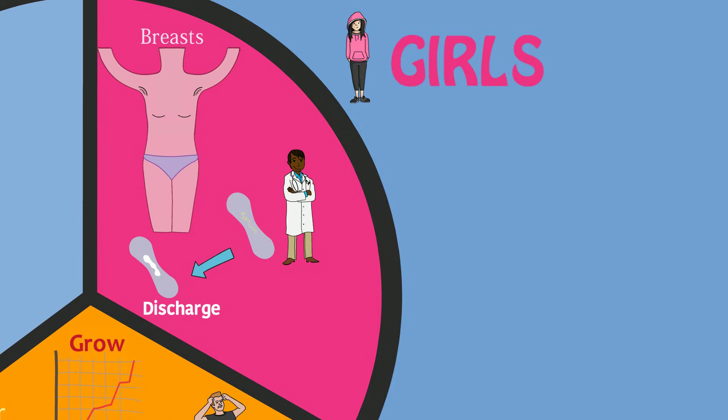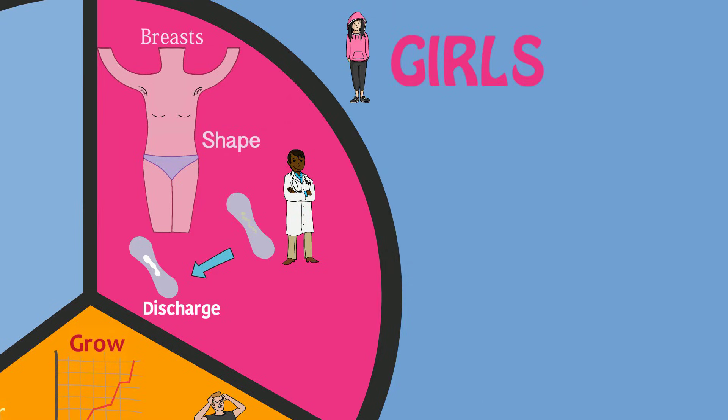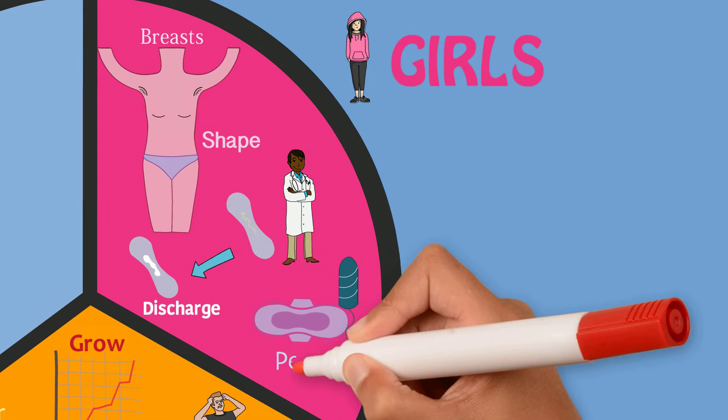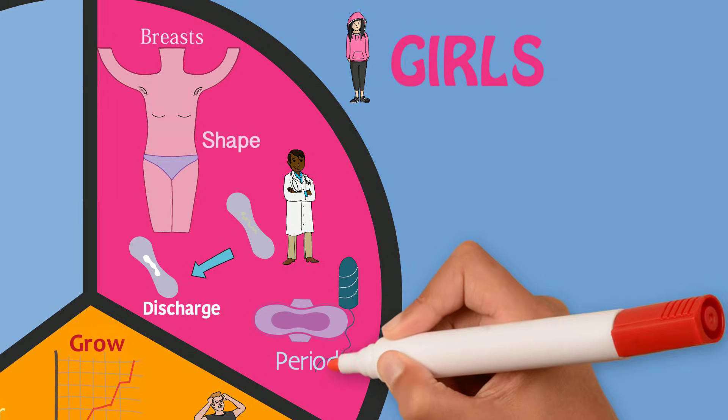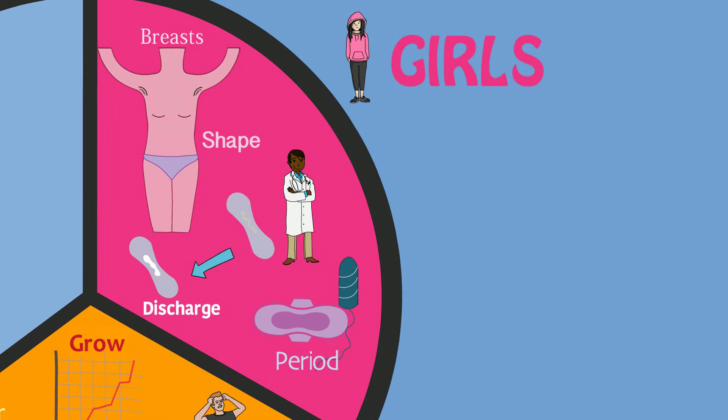Hips and thighs will start to grow and the overall shape of the body may change. Finally, girls will experience the start of menstruation, also known as a period, which will continue throughout most of their adult life.